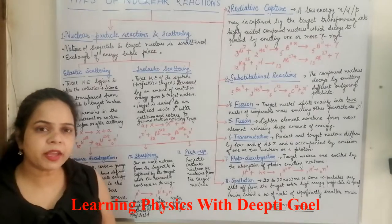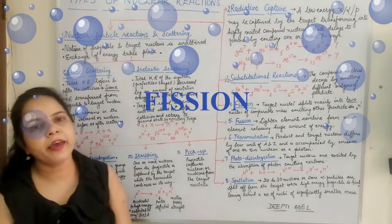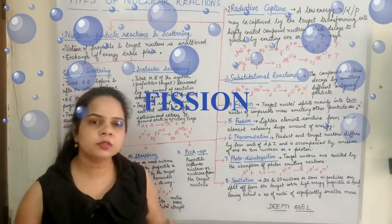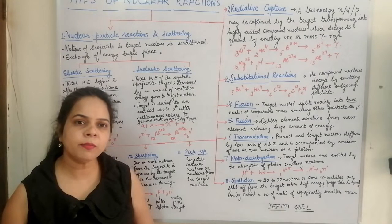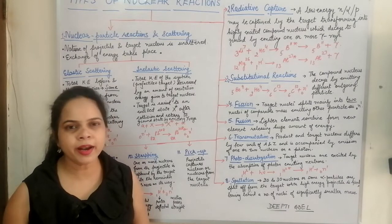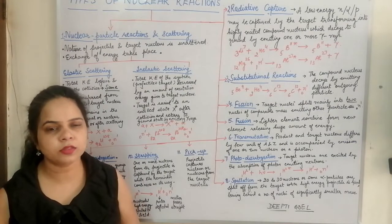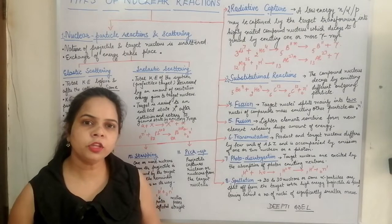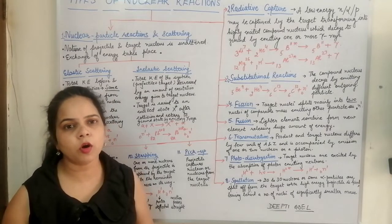The next reaction is the fission reaction. In fission, a heavier target nucleus splits into smaller nuclei of comparable masses, accompanied by the emission of neutrons. A familiar example is the fission of uranium, where uranium disintegrates into barium and krypton, and neutrons are also given off.